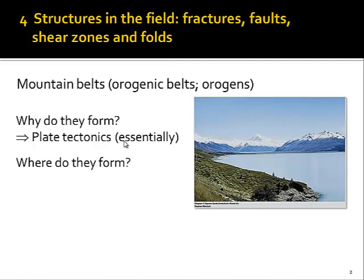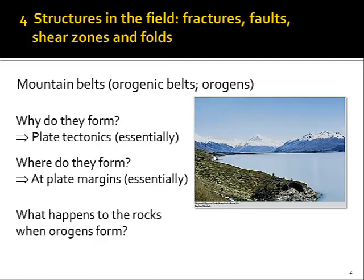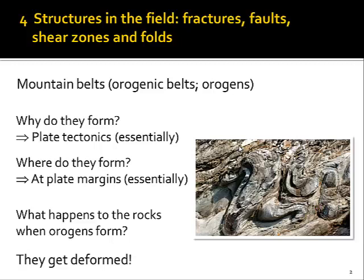Where do mountain belts form? Of course they form where plate tectonics are most active — at plate margins. At plate margins, all these tectonic processes we have been discussing are concentrated, while very little activity happens in the interior of large tectonic plates, and no mountain belts will form there. When rocks are formed in large mountain belts, we see deformation patterns like the folds in this picture — quite spectacular convoluted folding in layers of rocks. Folding requires layers, and between layers there should be mechanical differences.